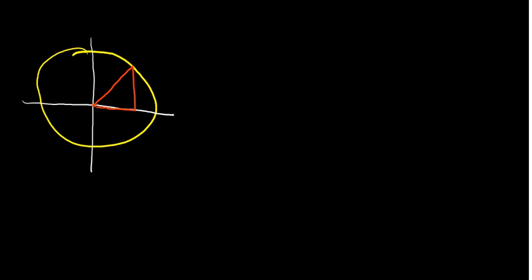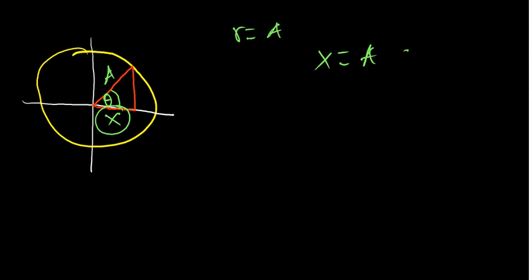We define the angle theta formed at the center. Since the object is not necessarily at the maximum position, we call that horizontal component x. Under simple harmonic motion, the radius corresponds to the amplitude A — when x reaches its maximum position, that equals the amplitude. So x here has not yet reached the circle, meaning it is not at its maximum position. We need to come up with x, which is the displacement.